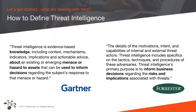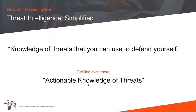I like to use two well-respected industry analyst organizations, Gartner and Forrester, and their definitions, which are quite similar and in line with each other. They both define intelligence as knowledge of threats that can be used to inform decisions. Forrester adds the addition of informing business decisions regarding risks. While these are very good definitions, they are a bit wordy. So I also like to distill these down to say that threat intelligence is knowledge of threats that you can use to defend yourself — or to get it down to just four words: it's actionable knowledge of threats.